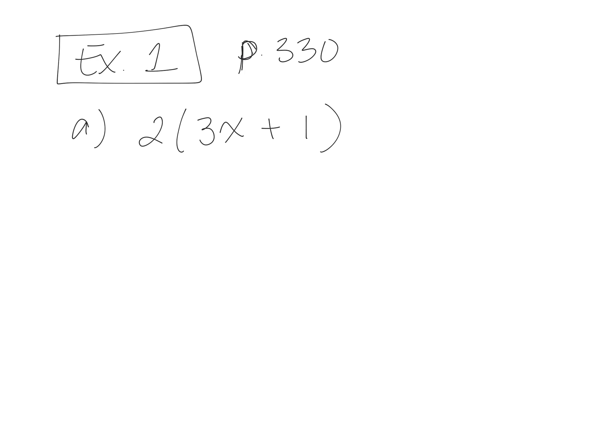What we're doing today is multiplying a polynomial — that's an expression with two or more terms — by a monomial. A monomial is an expression that has one term. So we're taking one term and multiplying it by something that has two or more terms.